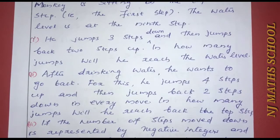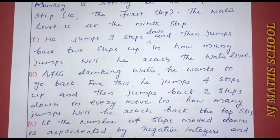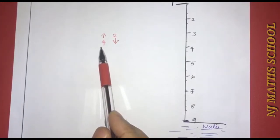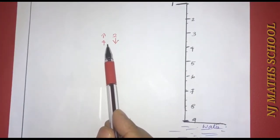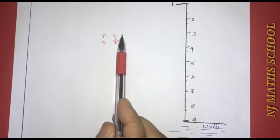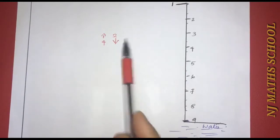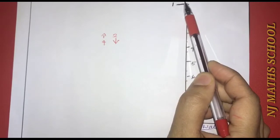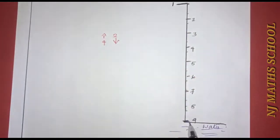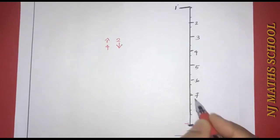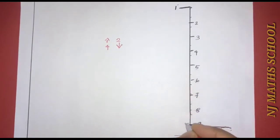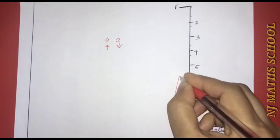The second part: after drinking water, the monkey wants to go back. For this, he jumps four steps up and then jumps back two steps down in every move. In how many jumps will he reach back the top step? Starting from the ninth step, four steps up — one, two, three, four — reaching the fifth step.